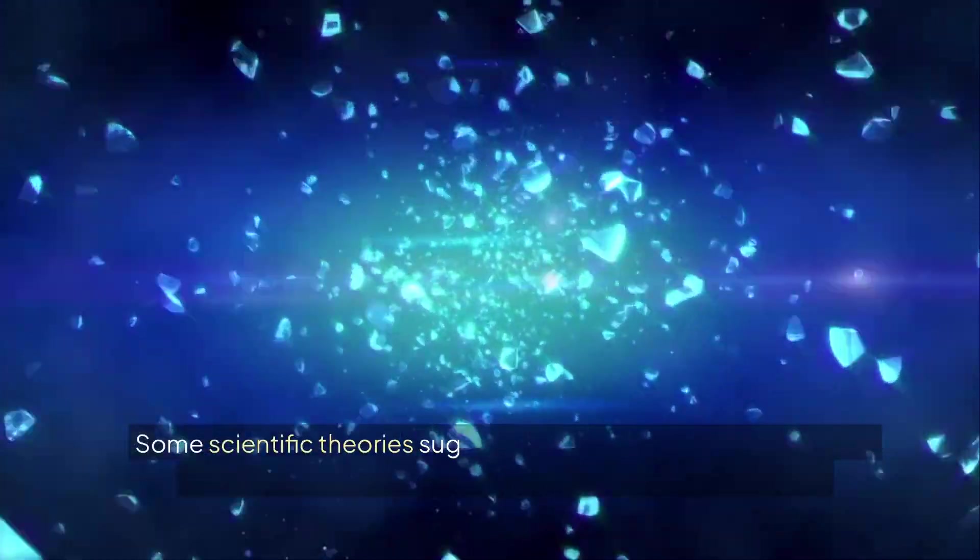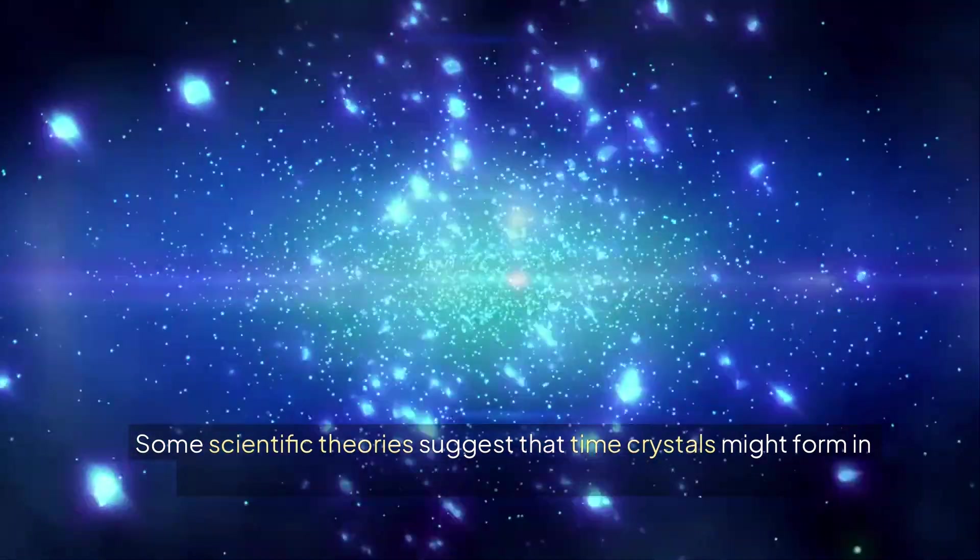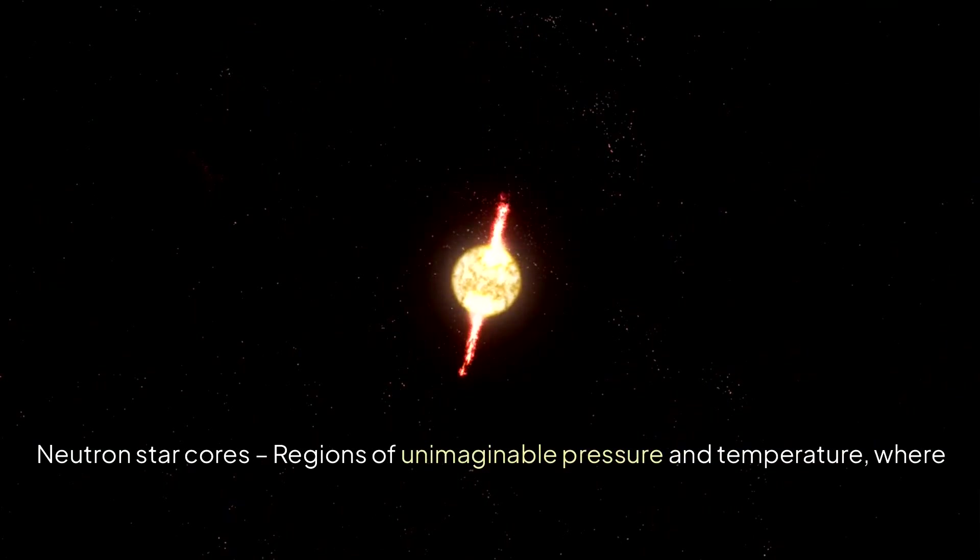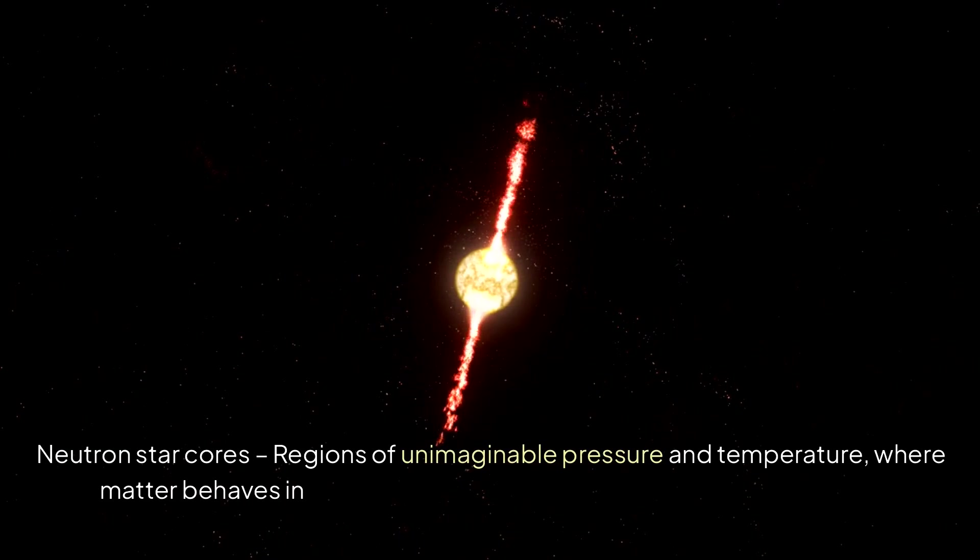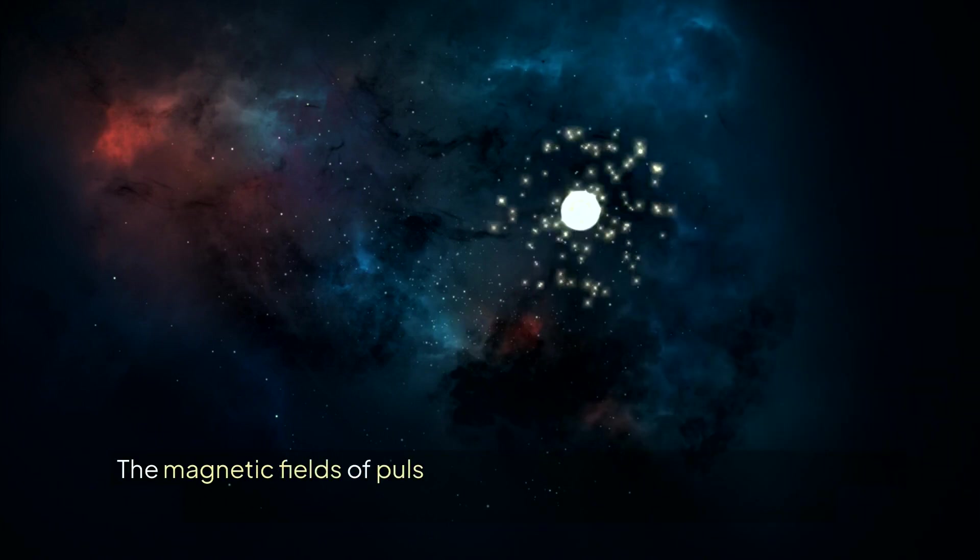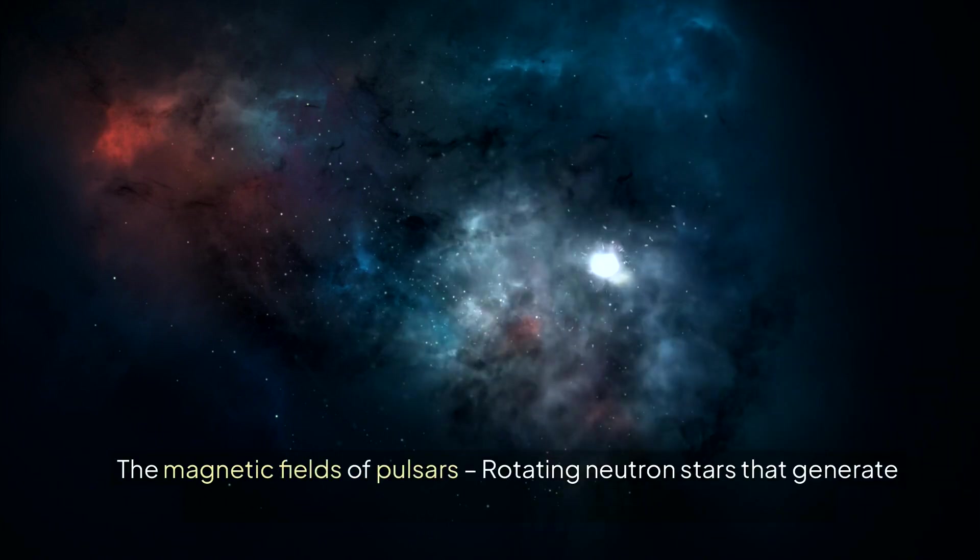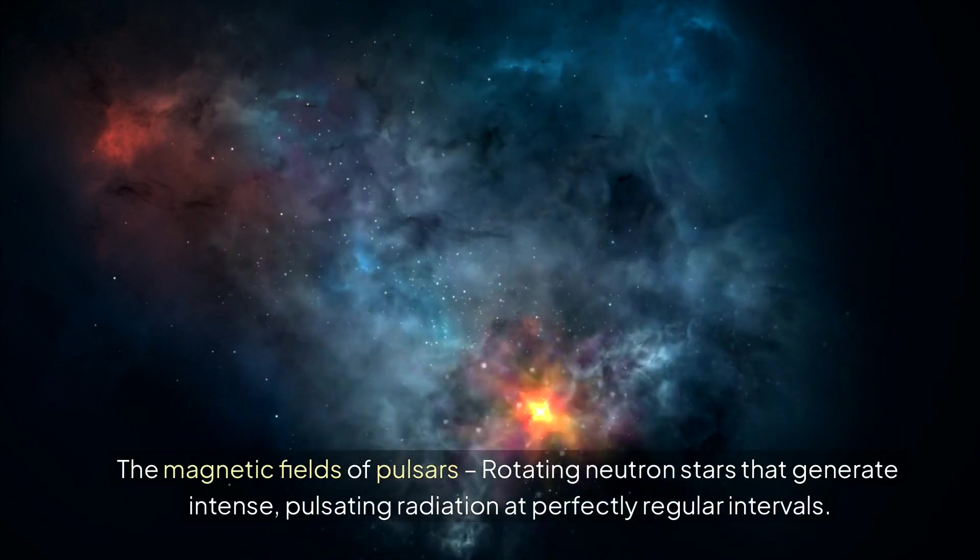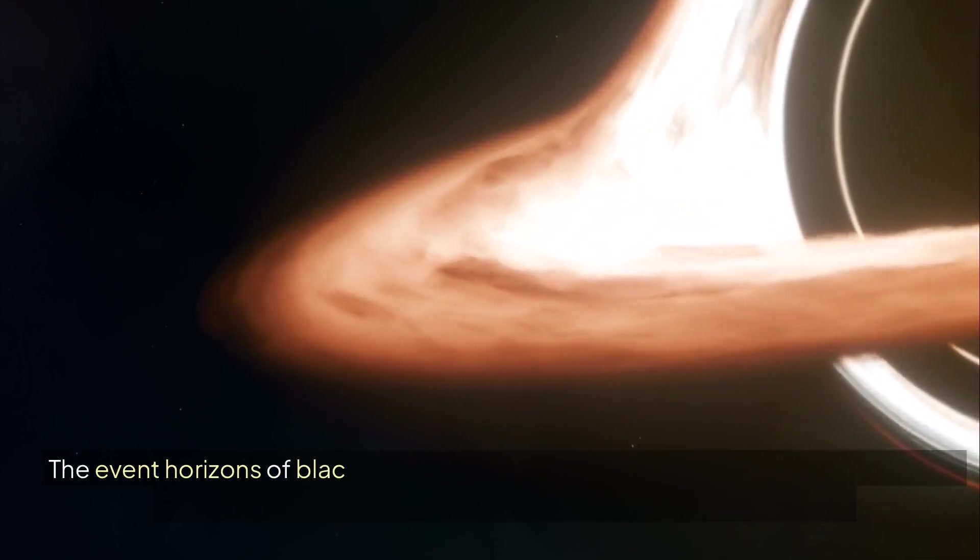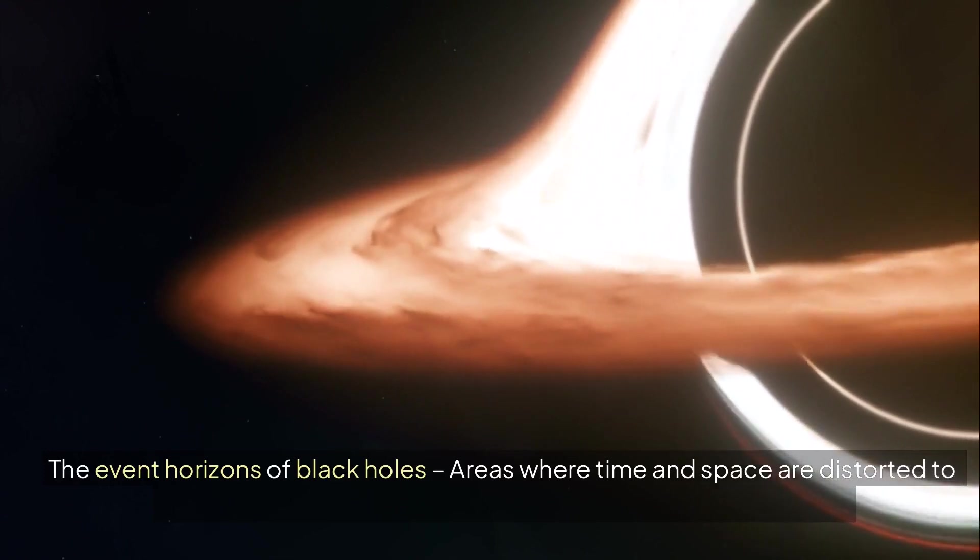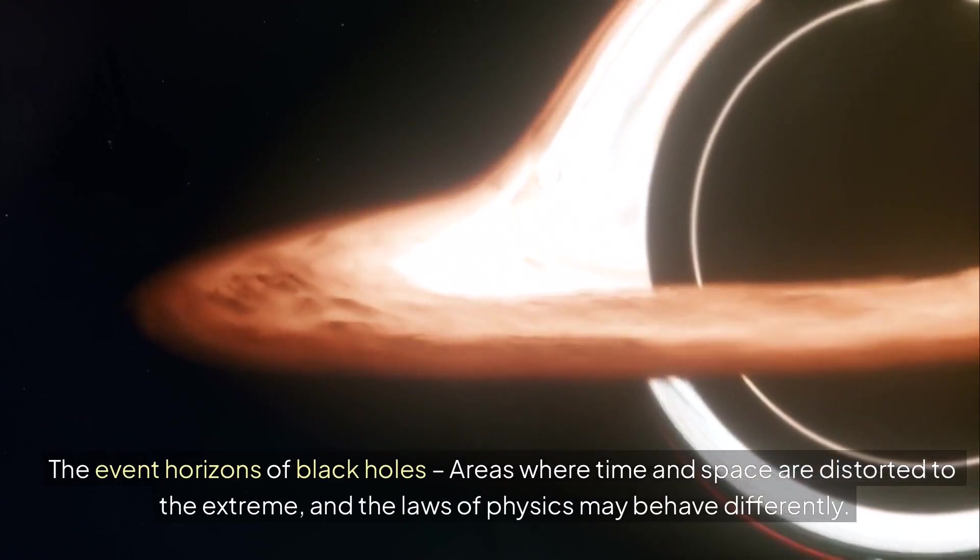Some scientific theories suggest that time crystals might form in environments with extreme physical conditions, such as neutron star cores—regions of unimaginable pressure and temperature, where matter behaves in ways completely different from anything we know. The magnetic fields of pulsars: rotating neutron stars that generate intense pulsating radiation at perfectly regular intervals. The event horizons of black holes: areas where time and space are distorted to the extreme, and the laws of physics may behave differently.